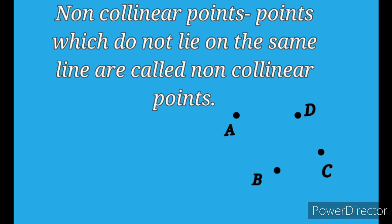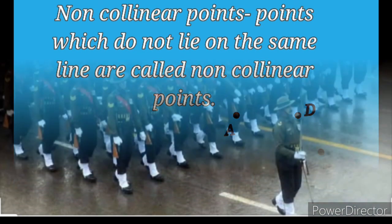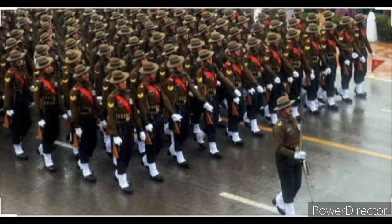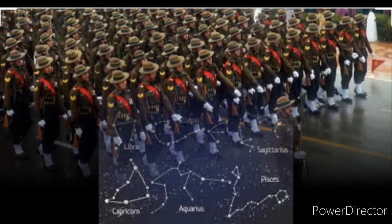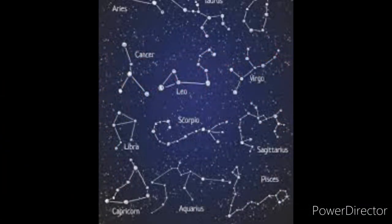If a point is not on a single straight line, it is called a non-collinear point. Definition of non-collinear points: points which do not lie on the same line are called non-collinear points. An example of collinear points is boys walking in a straight line during marching. An example of non-collinear points is the constellation we see in the sky.